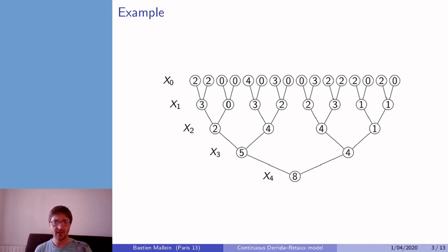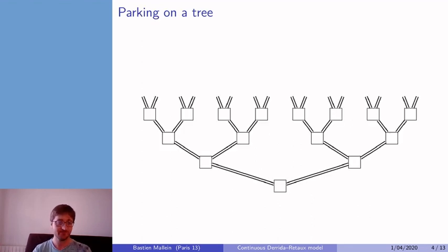The Derrida-Retaux model can be thought of as a parking process on the binary tree. If we replace internal nodes of the binary tree by parking spots and the edges by roads, we obtain the following picture. And then, the variable X₀ that we put on the leaves, this can be thought of as cars that try to park down the tree.